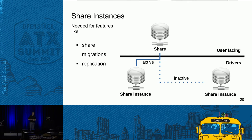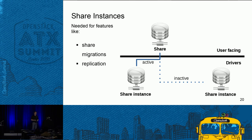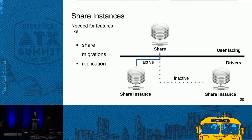Going back to Liberty: share instances were needed to enable share migrations and replication. On the back end, it keeps certain things hidden from the user. Previously, the UUID created for a share would change if you did a migration or replication. With share instances, that UUID stays the same, so the user doesn't see what's going on behind the scenes. That was an important prerequisite.